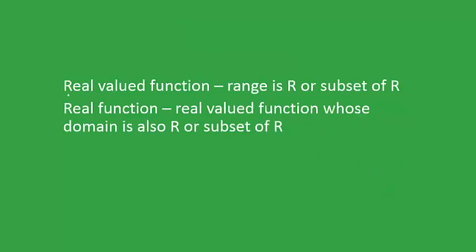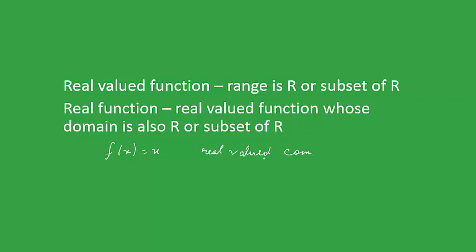A function is said to be a real function if it is real-valued and its domain is also ℝ or a subset of ℝ. As we saw for the previous example f(x) = x, the range was ℝ so it is a real-valued function, and the domain was also ℝ, so it is a real function as well.